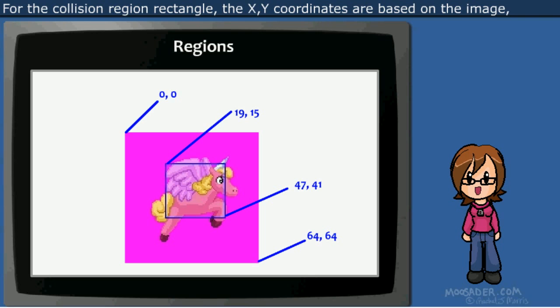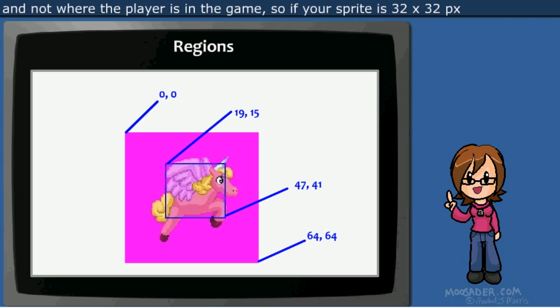For the collision region rectangle, the XY coordinates are based on the image and not where the player is in the game. So if your sprite is 32 by 32 pixels, the region's XY coordinates would be somewhere between 0 and 32, while the object's position coordinates would be anywhere from 0 to the width or height of the screen.